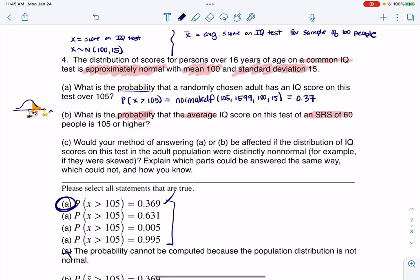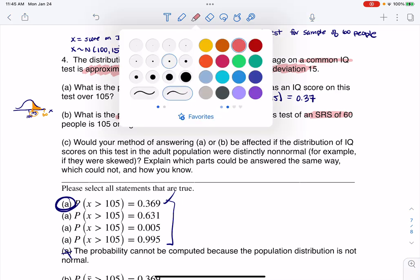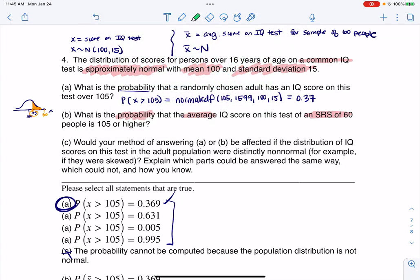Now, X bar, it's also going to have a normal distribution. The reason I can automatically put that there, well, I could do it for a couple of reasons, but the population was normal. So the sampling distribution is automatically normal.